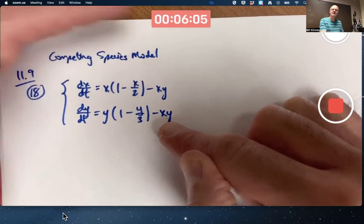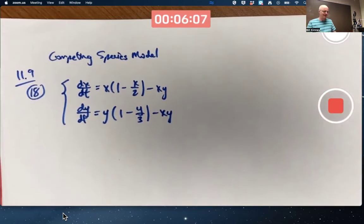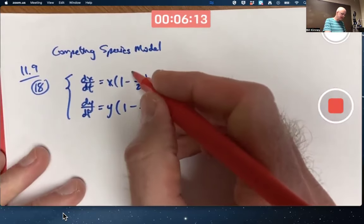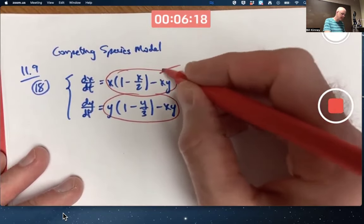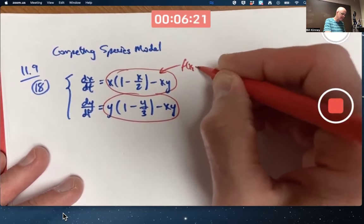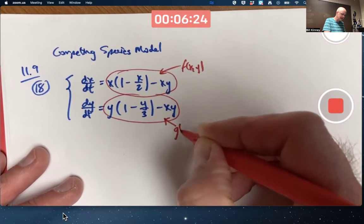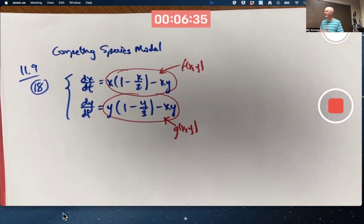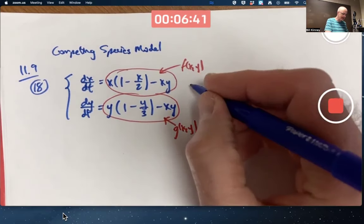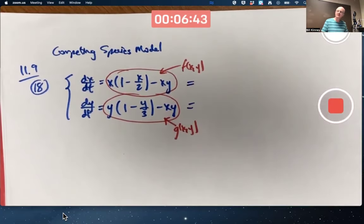We want to try to draw the phase plane, ideally without technology. For the purposes of using Mathematica and analysis, we give these right-hand side functions names: they are multivariable functions f(x,y) and g(x,y). To find the nullclines, you set those functions equal to 0. If they're both equal to 0 simultaneously, you solve for x and y to get the equilibrium points. It is good to factor as much as possible.